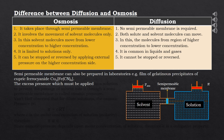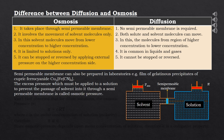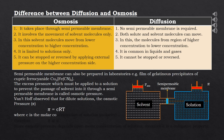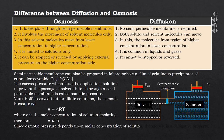The pressure just sufficient to stop osmosis is equal to the osmotic pressure. Thus, osmotic pressure is the excess pressure that must be applied to a solution to prevent the passage of solvent into it through a semi-permeable membrane. Van't Hoff observed that for dilute solutions, osmotic pressure π = CRT, where C is the molar concentration (molarity), R is the gas constant, and T is the temperature in Kelvin.